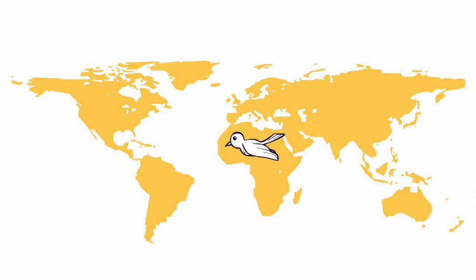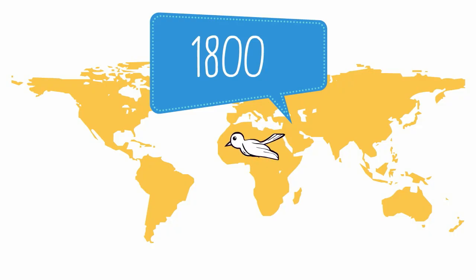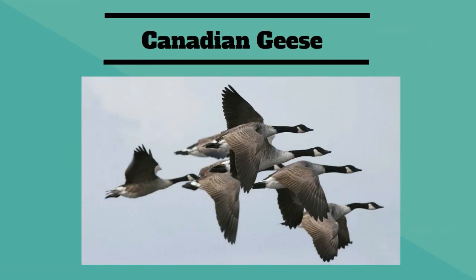In birds, over 1,800 of the 10,000 species of bird migrate long distances each year. For example, Canadian geese travel from their winter home in the north to a more pleasant southern location as winter approaches.